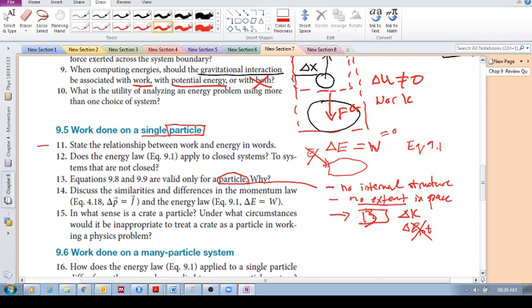Because it has no extent in space. It's just a dot. It has no internal structure, so the structure cannot change shape. So, the only thing that can change, if we are idealizing an object as a particle, the only thing that can change is our kinetic energy. And those equations we saw work is F external delta X. They were derived for a particle, which means what? Which means that we don't consider the internal energy to change.